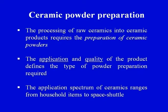The processing of raw ceramics into ceramic products requires the preparation of ceramic powders. The raw material usually comes from natural minerals. These natural minerals require processing — in many cases rigorous processing — so that we get the desired characteristics of the powder. The level of processing depends upon the final quality and application for which the powder is being prepared.